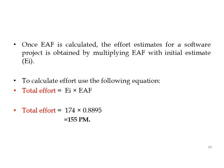Once the EIF is calculated, the total effort is obtained by multiplying the initial effort EI by the Effort Adjustment Factor EIF. Total Effort = EI × EIF = 174 × 0.885 ≈ 155 person-months. That is the total effort estimated as per Intermediate COCOMO. Thank you.